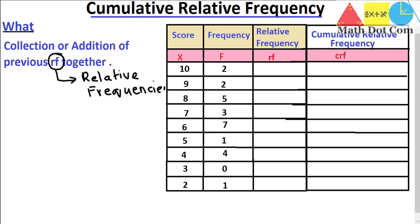Now we will see how we can calculate the cumulative relative frequency. Let's move towards the table. We have four columns: the first column is of score, the second is of frequency, the third is of relative frequency, and the fourth is of cumulative relative frequency. For cumulative relative frequency, we must have the relative frequency.